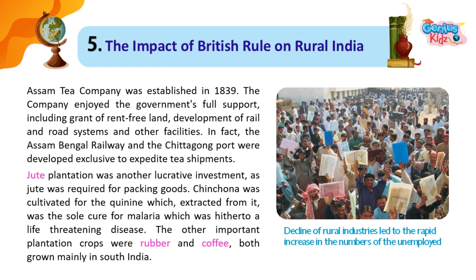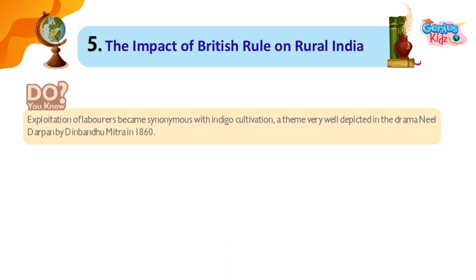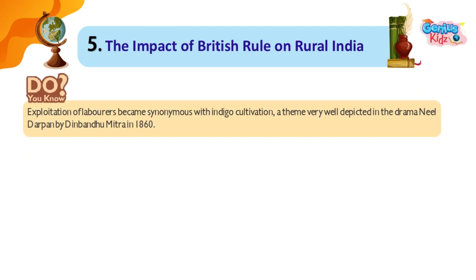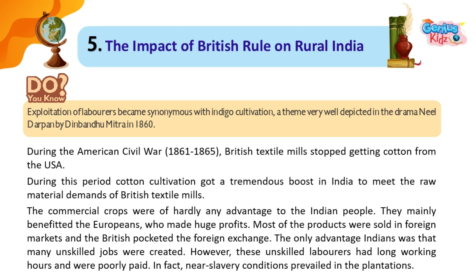Decline of rural industries led to a rapid increase in the numbers of the unemployed. Do you know? Exploitation of labourers became synonymous with indigo cultivation, a theme very well depicted in the drama Neel Darpan by Dinbandhu Mitra in 1860. During the American Civil War (1861–1865), British textile mills stopped getting cotton from the USA. During this period, cotton cultivation got a tremendous boost in India to meet the raw material demands of British textile mills.